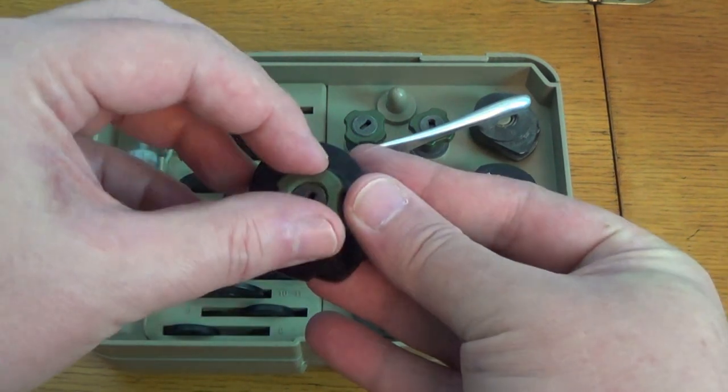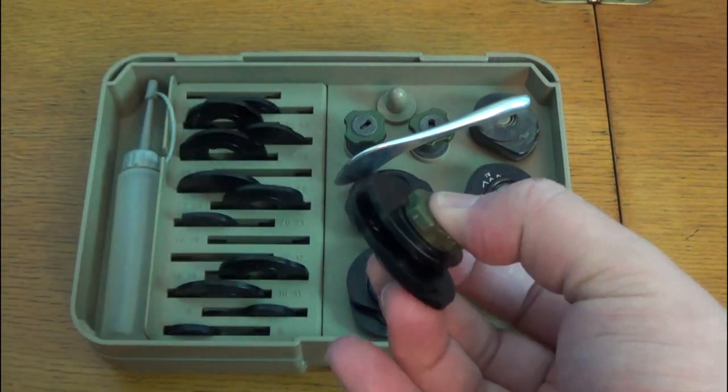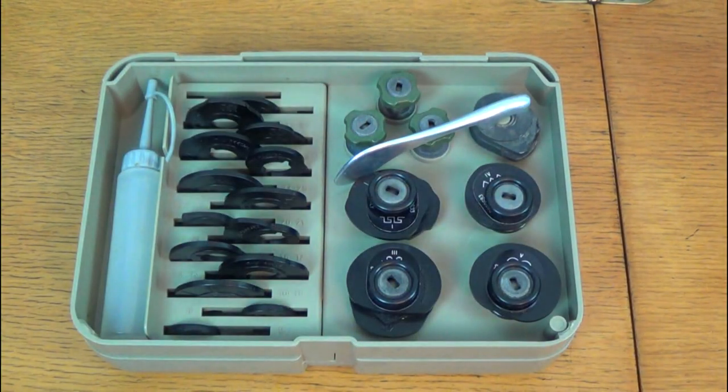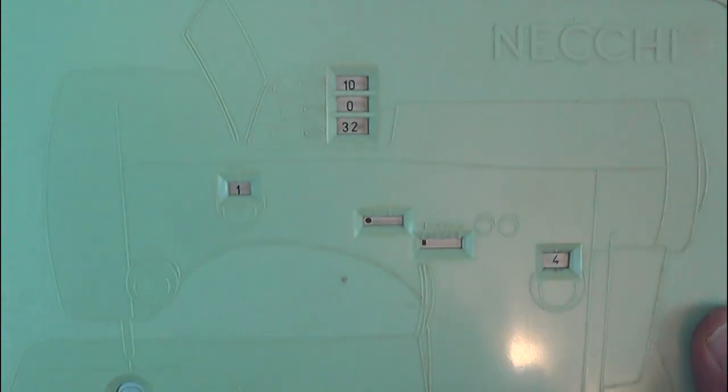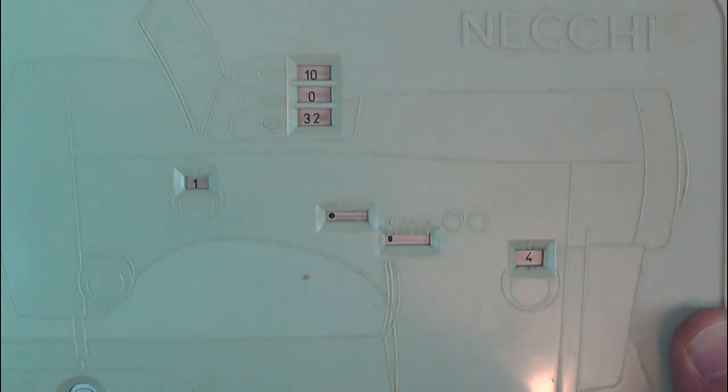There are also four cams pre-made along with a buttonhole cam that looks like a chrome door handle. The accessory box lid has a dial. Select the decorative stitch you require and it displays which discs to use in which order, as well as the main machine settings.